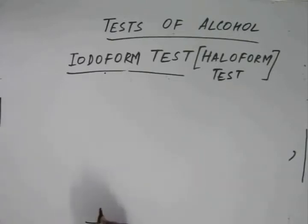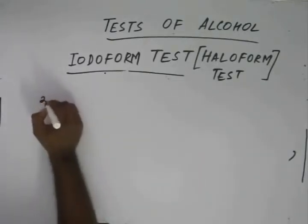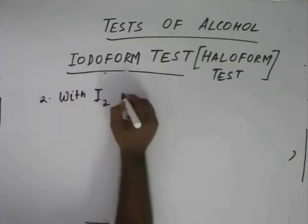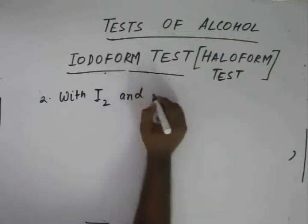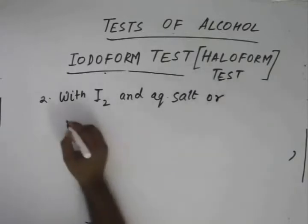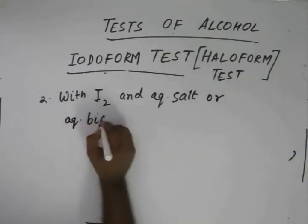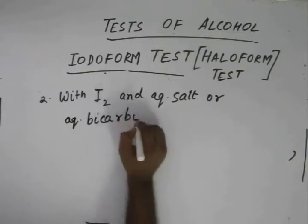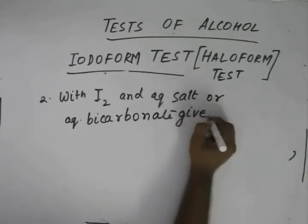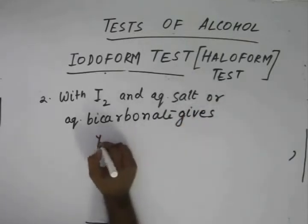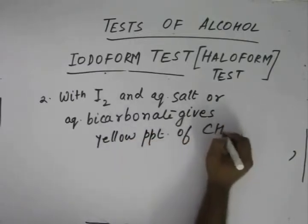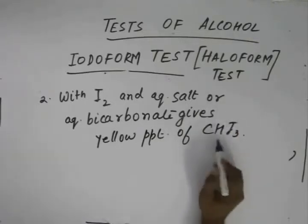Let me write the second point. With iodine and aqueous salt or aqueous bicarbonate, a yellow precipitate of CHI3 is formed. This is the iodiform reaction.